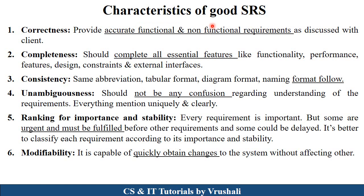The next topic is characteristics of a good SRS. The first is correctness — each functional and non-functional requirement discussed with the customer must be mentioned accurately. The second is completeness — all essential features like functionality, performance, and design constraints must be mentioned clearly. The third is consistency — the complete SRS report should follow a particular format for tables and diagrams. The fourth is unambiguous — there should be no confusion between the customer and developer; everything must be stated uniquely and clearly.